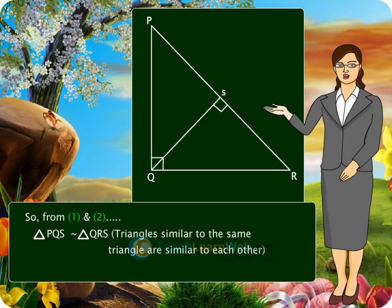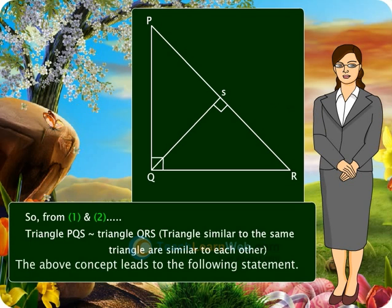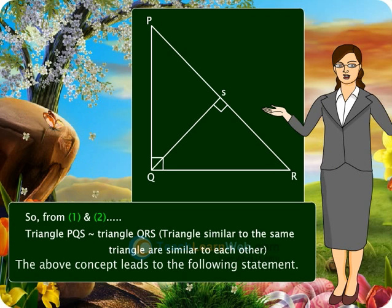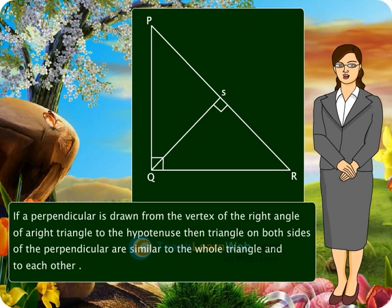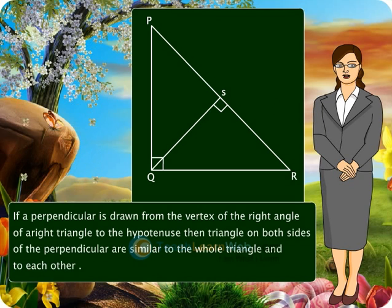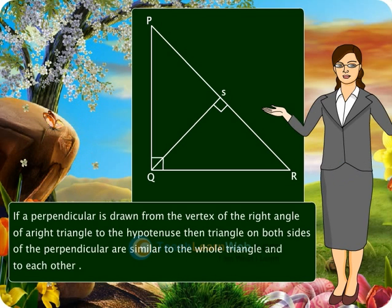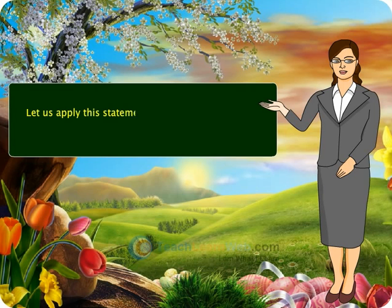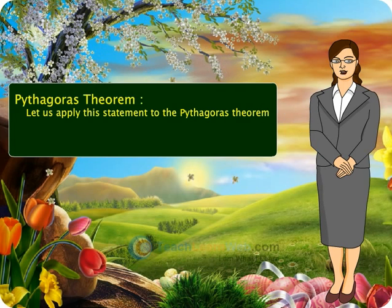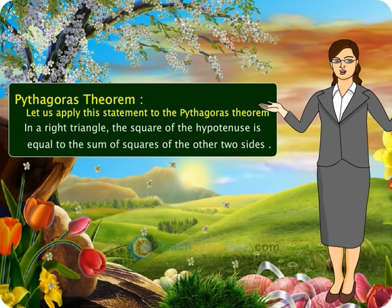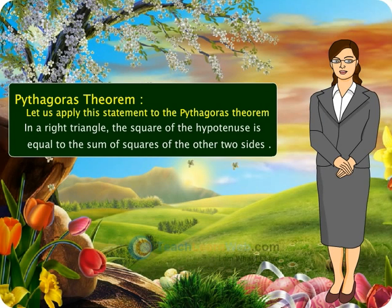Triangles similar to the same triangle are similar to each other. The above concept leads to the following statement: if a perpendicular is drawn from the vertex of the right angle of a right triangle to the hypotenuse, then the triangles on both sides of the perpendicular are similar to the whole triangle and to each other. Pythagoras Theorem: in a right triangle, the square of the hypotenuse is equal to the sum of the squares of the other two sides.